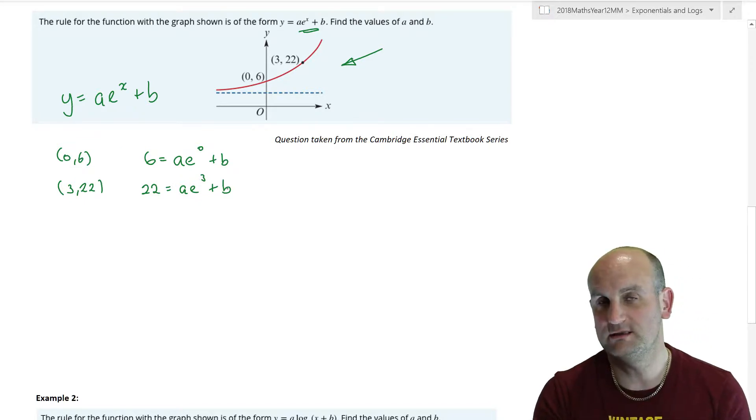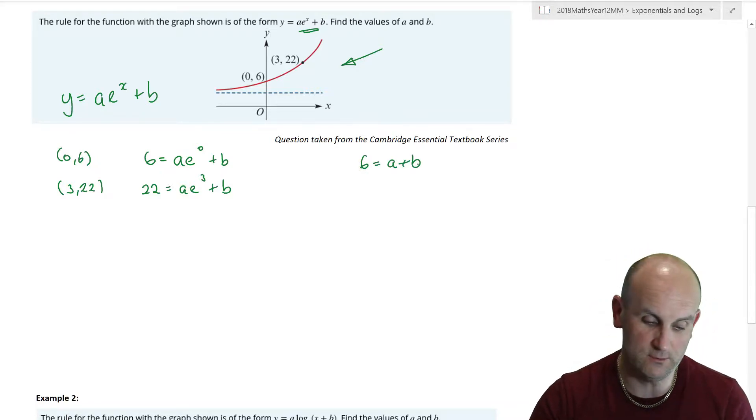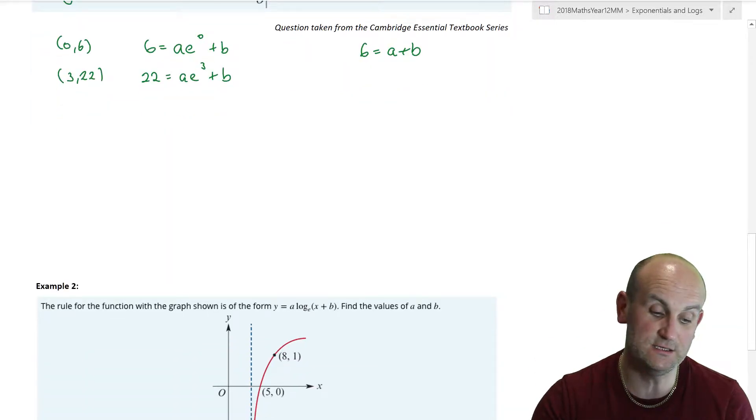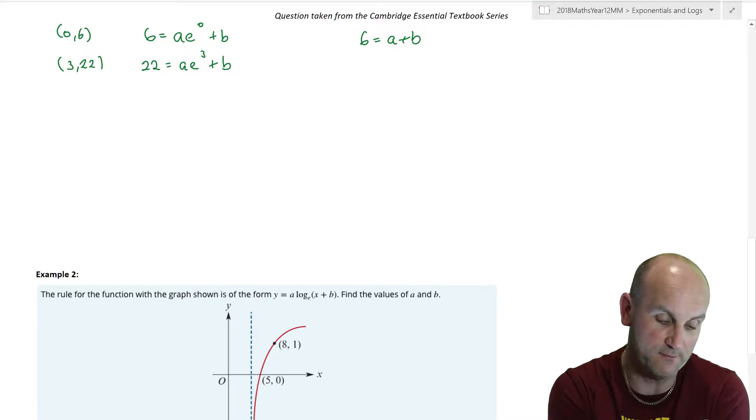So if I now look at the value 0, 6, the first thing to note is make sure you get your x and the y the right way around. The number of people who get those the wrong way around is actually fairly terrifying. So where I see y, I'm going to put 6 equals ae to the 0 plus b. So there's the first equation. I've now got 3 comma 22, so 22 equals ae to the 3 plus b. Now you're already saying to me, e to the 0, it's 1, and I know that. Thank you. So I'm going to write 6 equals a plus b here and I'm going to come back to that in a moment.